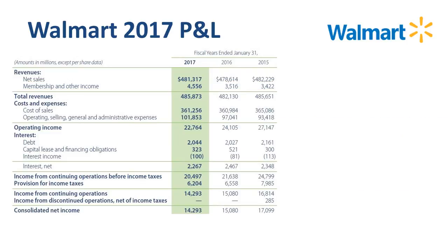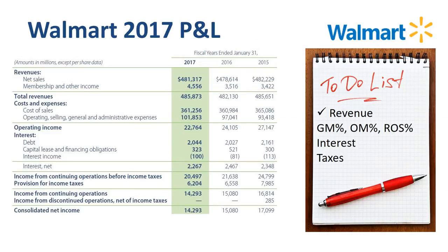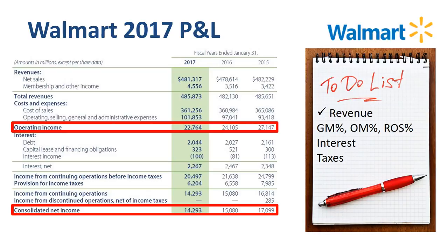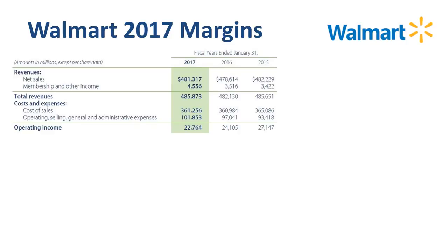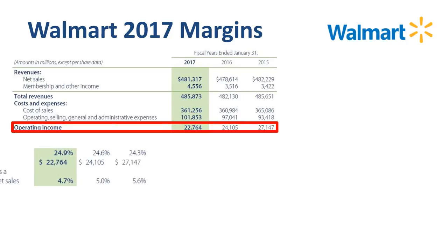We now have a clearer picture of what is driving revenue, which is the top line in the income statement. Next, let's look at the margin performance, which we can analyze at three levels: Gross Margin Percentage — gross margin as a percentage of revenue; Operating Margin Percentage — operating income as a percentage of revenue. Let's review the percentages that Walmart provides us in the annual report.